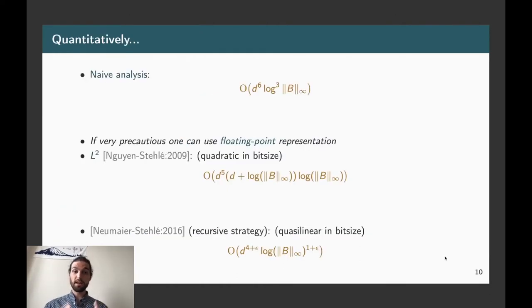So quantitatively speaking, if we perform a naive analysis of this procedure, basically we find a dependency, which is sextic in the dimension of the lattice, and which is cubic in the bit size. However, if we replace naive arithmetic, in particular, handling rational coefficients by numerator and denominator, and we use floating point representation, basically we can prove that we can decrease the dependency in the bit size to quadratic. And this was epitomized by the work of Nguyen and Stehlé in 2009. More recently, using a recursive strategy, Neumaier and Stehlé proved that we can be actually quasi-linear in the bit size of the input and be only quasi-quartic in the dependency on the dimension.